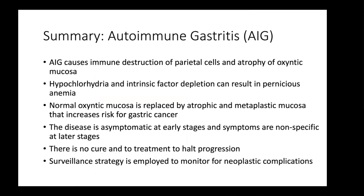In summary, autoimmune gastritis causes immune destruction of parietal cells and atrophy of the oxyntic mucosa. Hypochlorhydria and intrinsic factor depletion can result in pernicious anemia. Normal oxyntic mucosa is replaced by atrophic and metaplastic mucosa, increasing cancer risk. The disease is asymptomatic at early stages and has nonspecific symptoms at later stages, making it very difficult to identify. These patients almost always have a delayed diagnosis. There is no cure and no treatment to halt progression, and surveillance is employed to monitor for neoplastic complications.